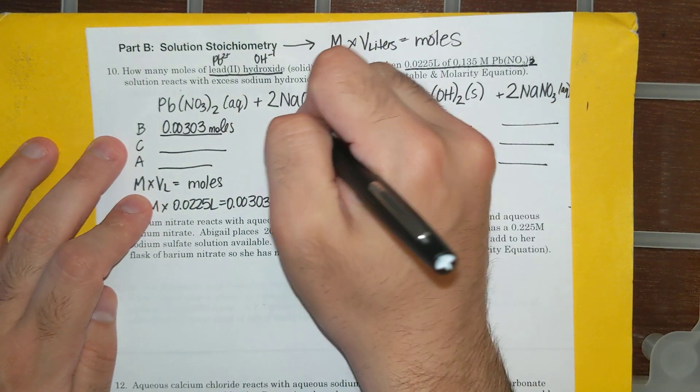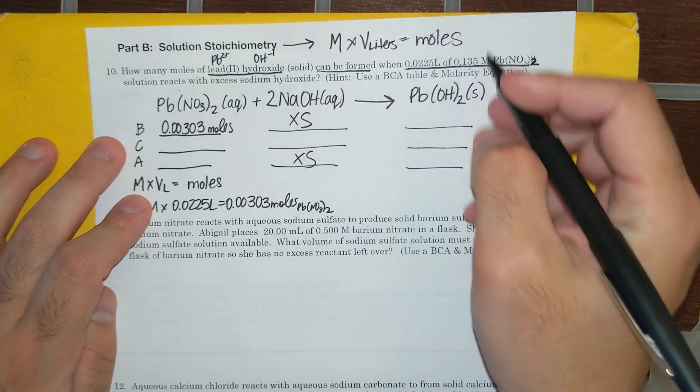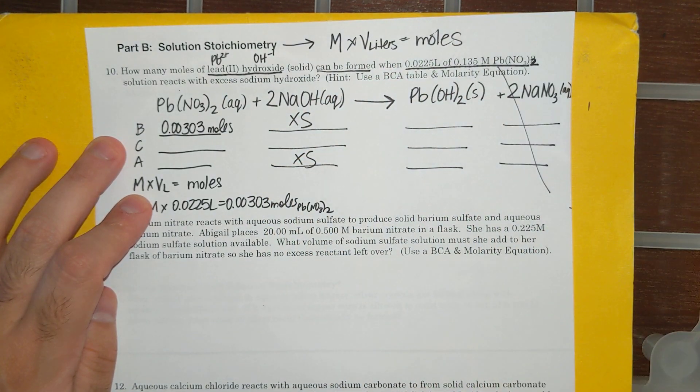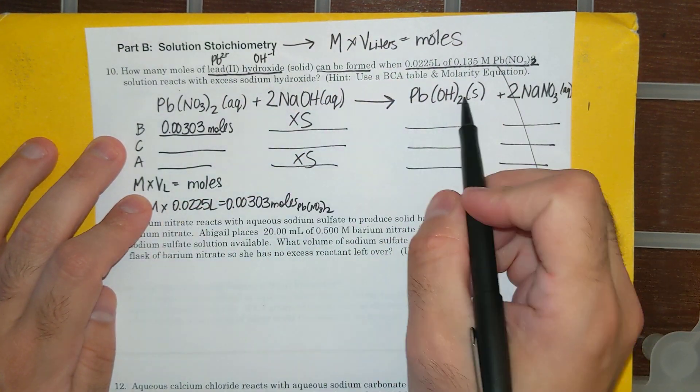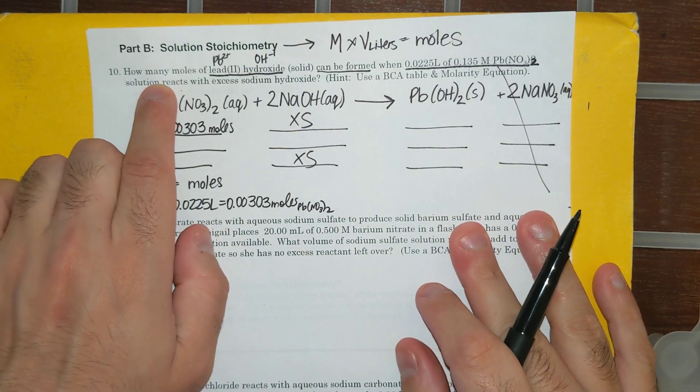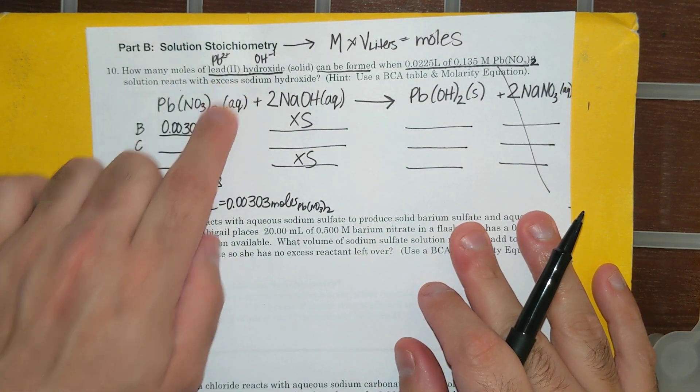It said excess NaOH, and I don't really care. I'm going to leave that blank. And it doesn't talk about NaNO3. I only care about lead nitrate to lead hydroxide, because the question's asking about how many moles of lead hydroxide.